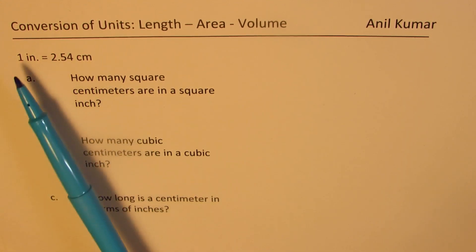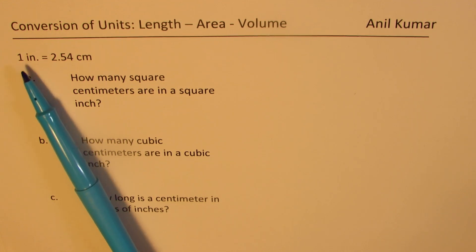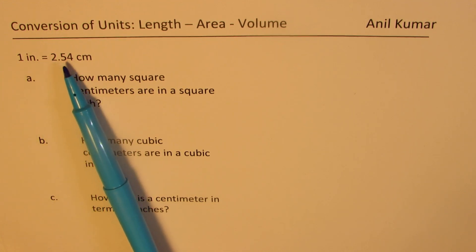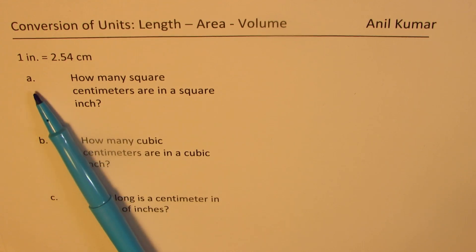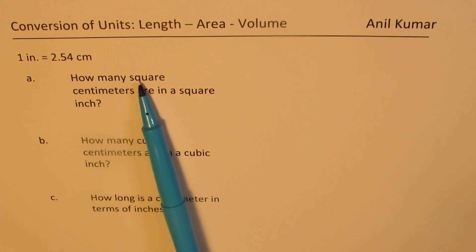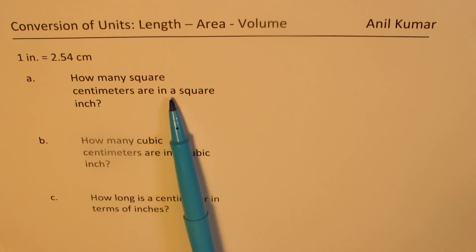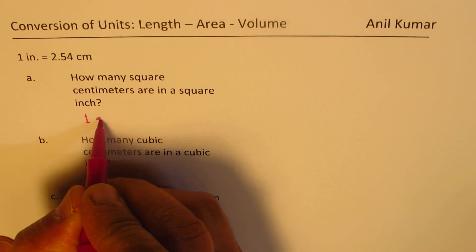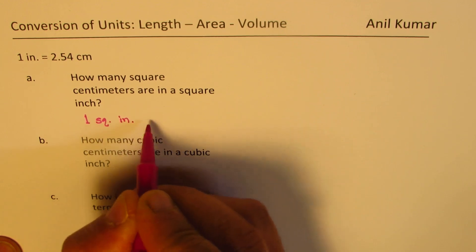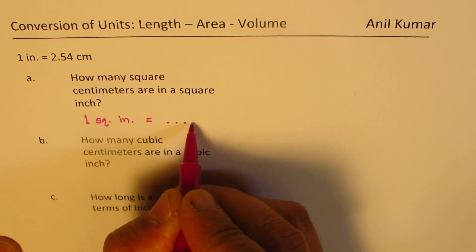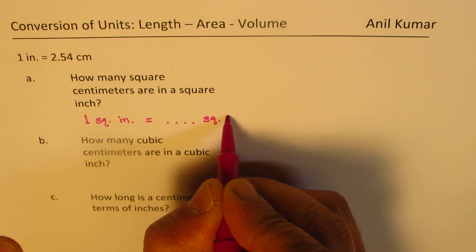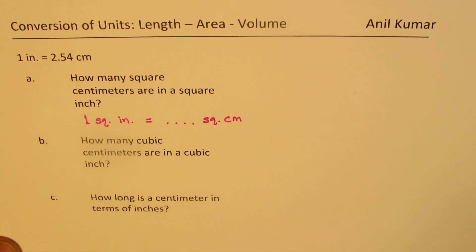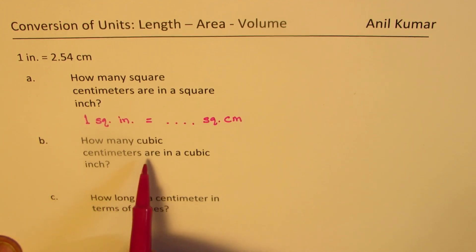Part one is based on what is given to us: one inch equals 2.54 centimeters. Part A is: how many square centimeters are in a square inch? So the question is: one square inch equals how many square centimeters?